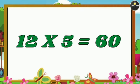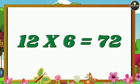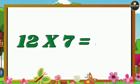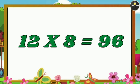12 fives are 60. 12 sixes are 72. 12 sevens are 84. 12 eights are 96.